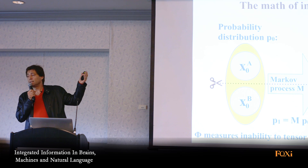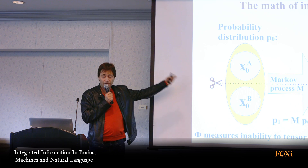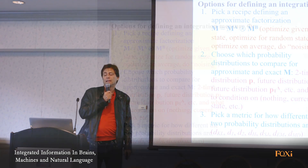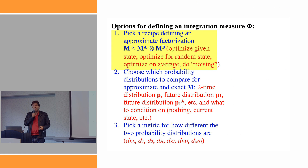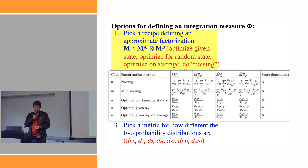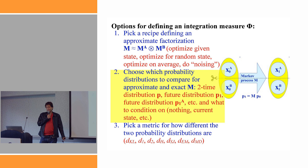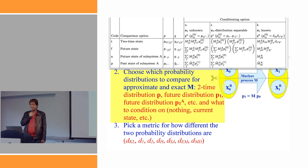In this language it turns out that there are not gazillions of different ways you can define phi, because you can break down your choice of phi measure into just a small sequence of choices. First you pick your recipe - which way you're going to factorize your method - and it turns out there are only five that are really nice. You might pick the optimal factorization given the state you're in, optimize for some random state, optimize on average, or do what's called noising in IIT. So you've got five options there.